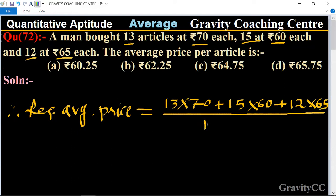which is 13 + 15 + 12. This equals 910 + 900 + 780 upon 40. The total sum equals 2590 upon 40.